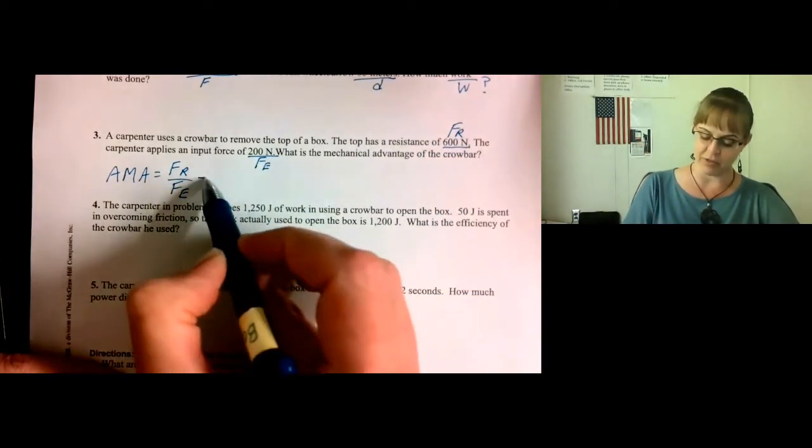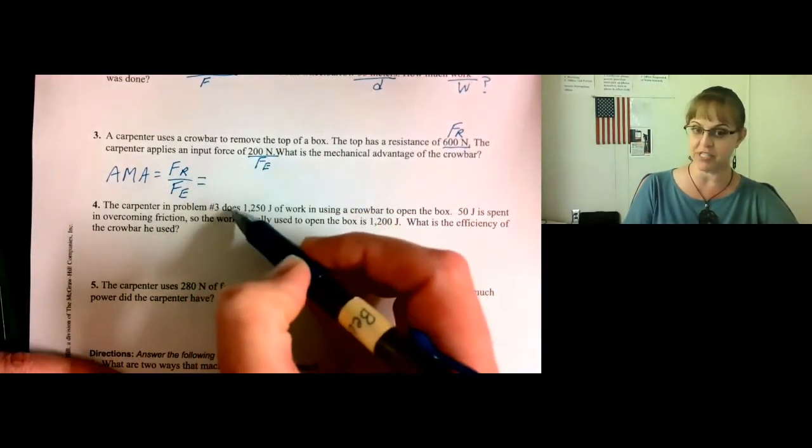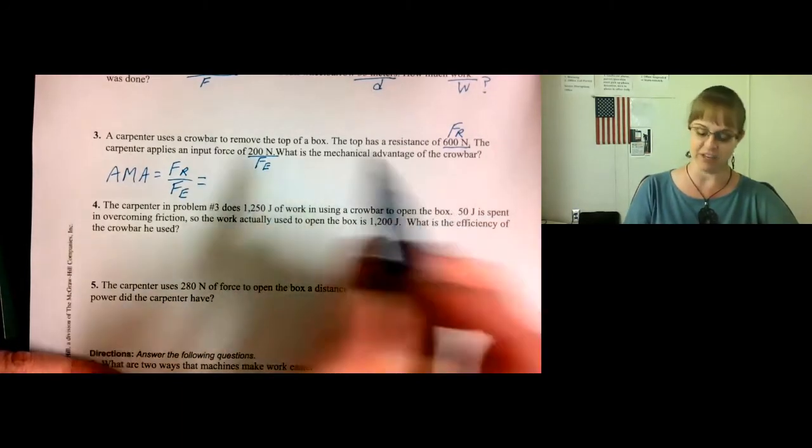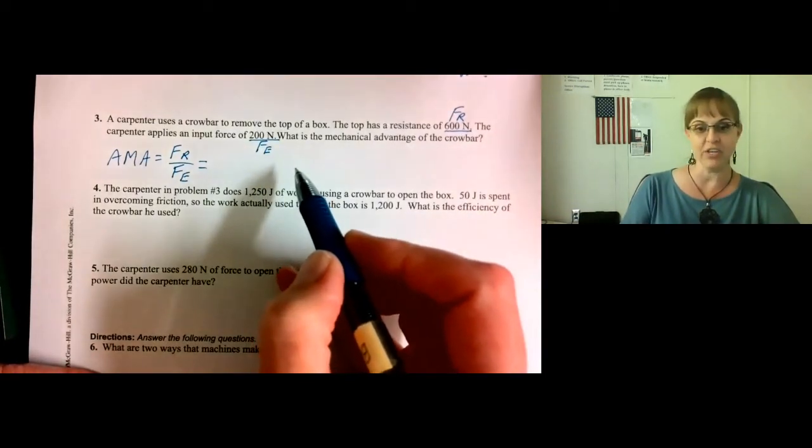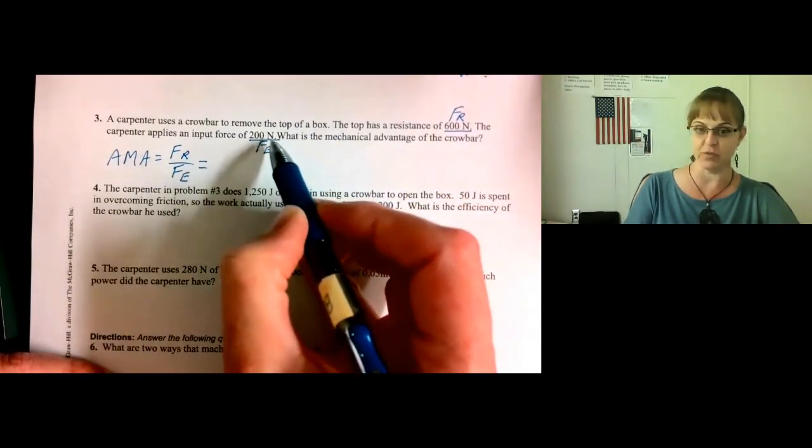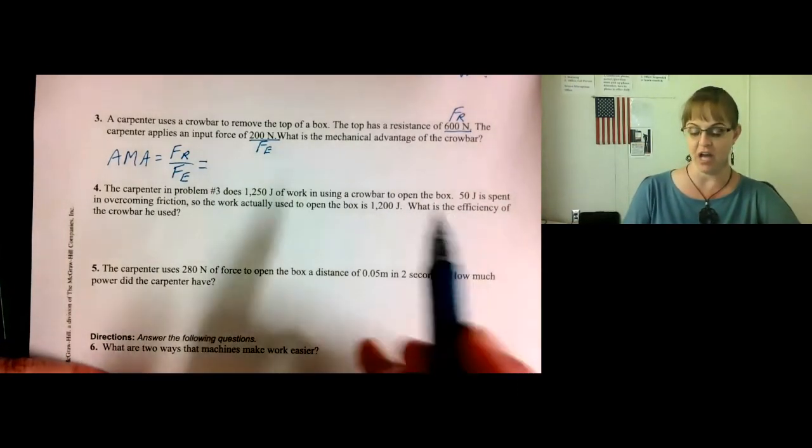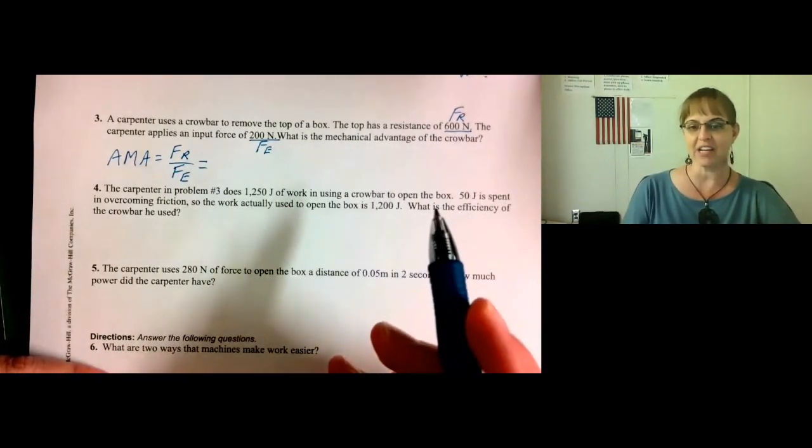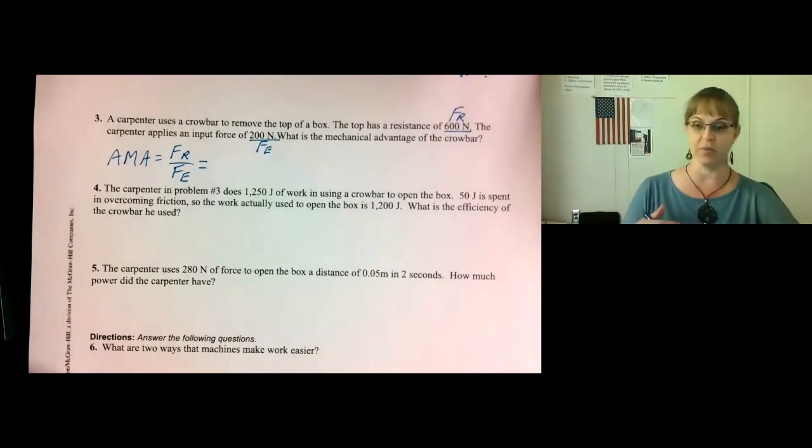And now, plug those two numbers into the formula and give me your answer. You only have to show the numbers and whether you multiply or divide. Your answer will not have a unit. The reason is newtons divided by newtons cancels. So there is no unit on a mechanical advantage. In fact, the meaning of the mechanical advantage is how many times easier is it to do the work. So if you have a mechanical advantage of five, that means it's five times easier to do the work.